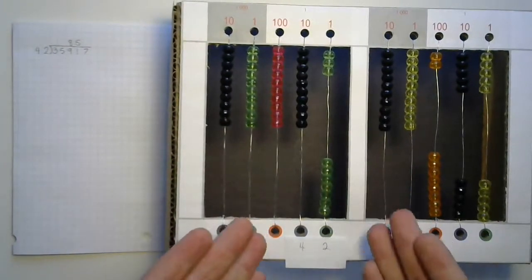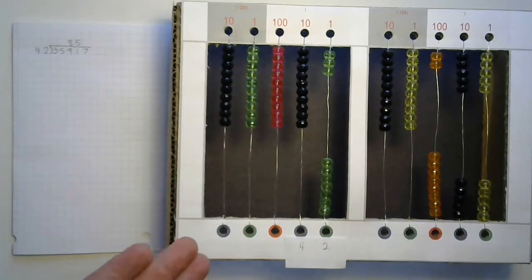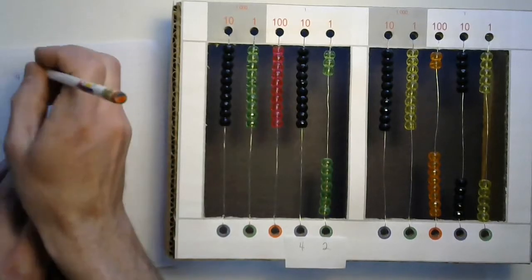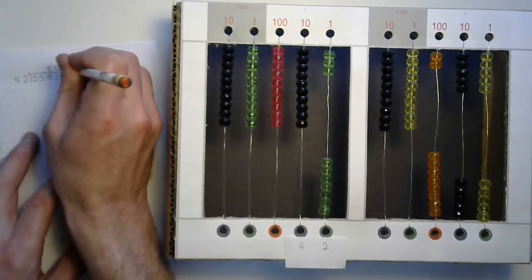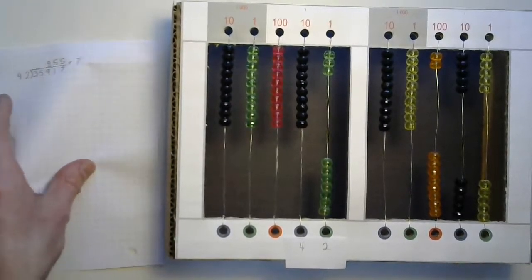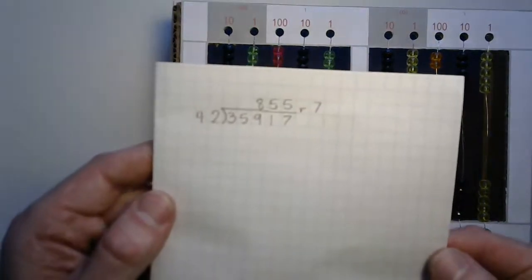We don't have enough left. We actually have something left over there. Let's see what that is. Seven, right? And how much did we get for our answer? 855. So, 855 with a remainder of seven. How cool is that?